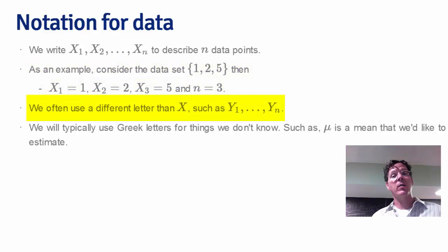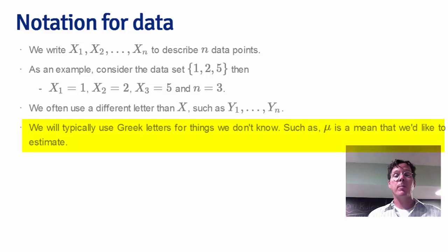There's nothing in particular about the letter X. We could have just as easily described Y₁ to Yₙ. The last bit of notation that's important is we're typically going to use Greek letters for things we don't know, population things we don't know, such as μ for a population mean, and then we'll use non-Greek letters or regular letters to denote things that we can observe. So x̄ is something we can observe, μ is something we cannot observe and would like to estimate.